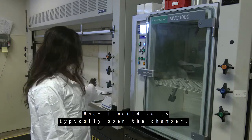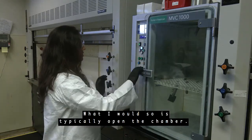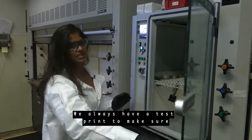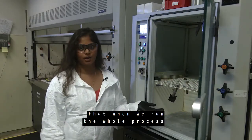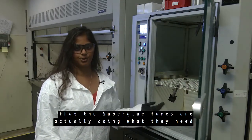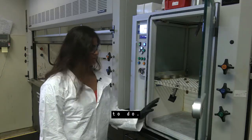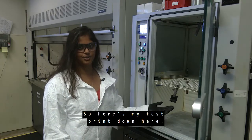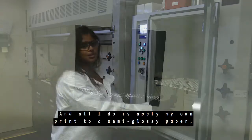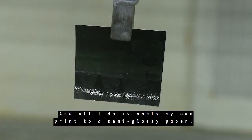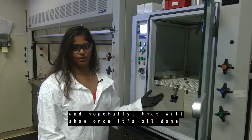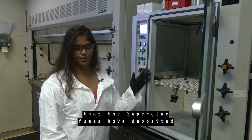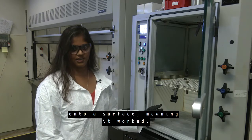What I would do is typically open the chamber. We always have a test print to make sure that when we run the whole process that the superglue fumes are actually doing what they need to do. So here's my test print and all I do is apply my own print to a semi-glossy paper and hopefully that will show once it's all done that those superglue fumes have deposited onto a surface, meaning it worked.